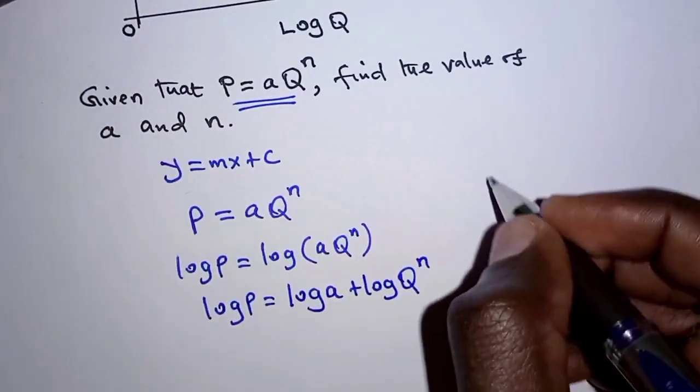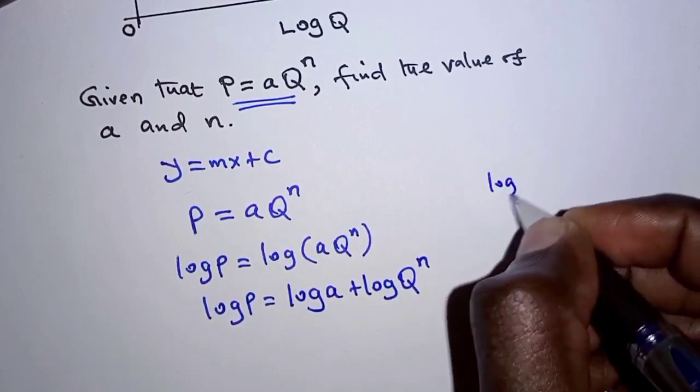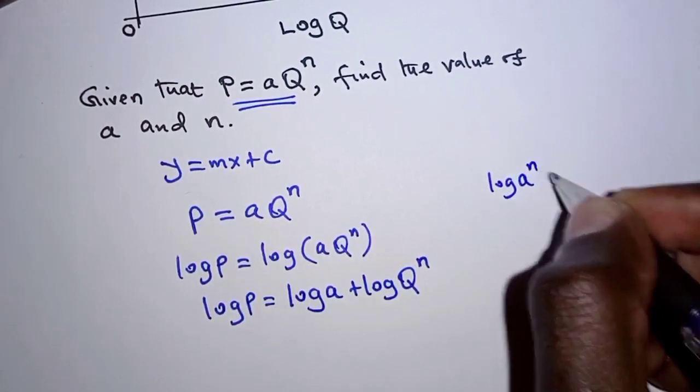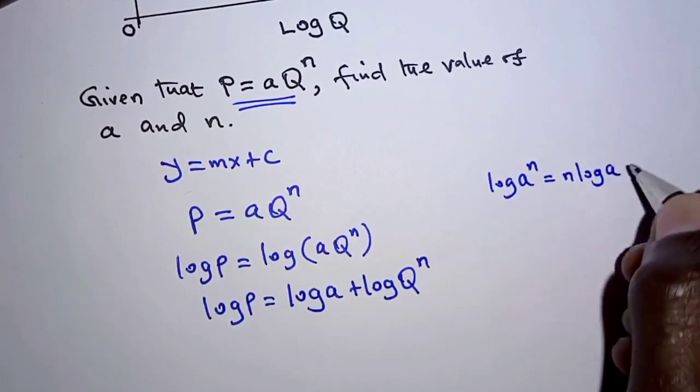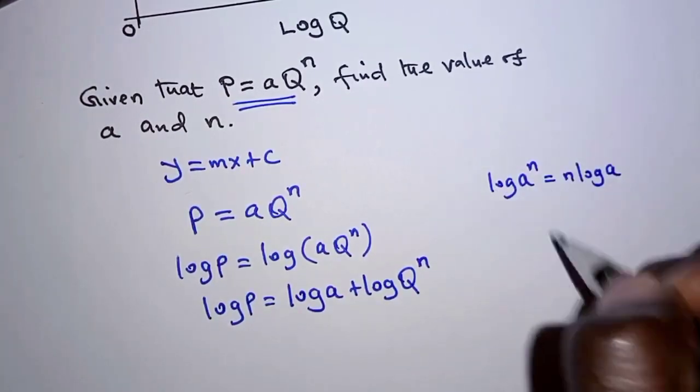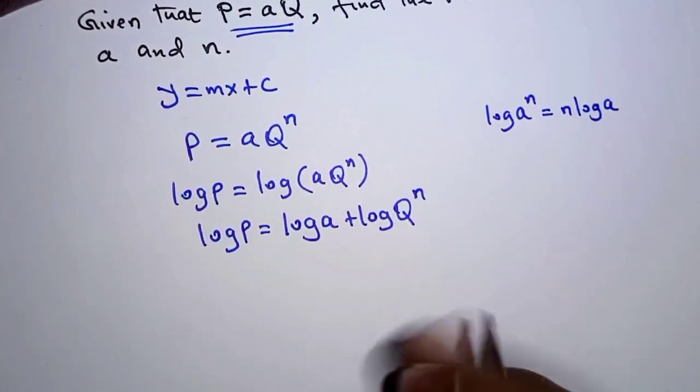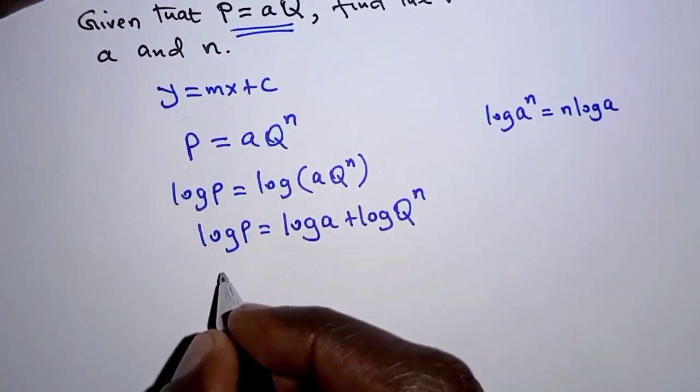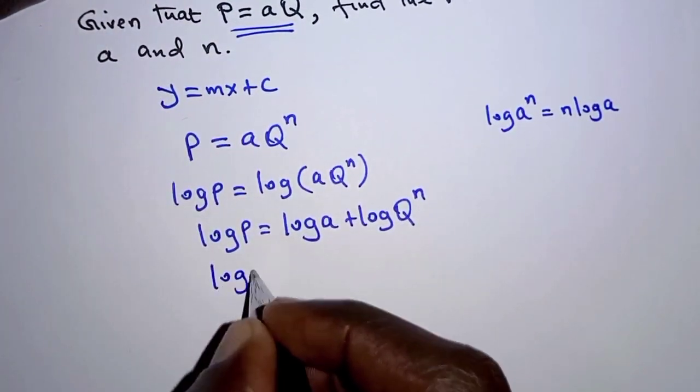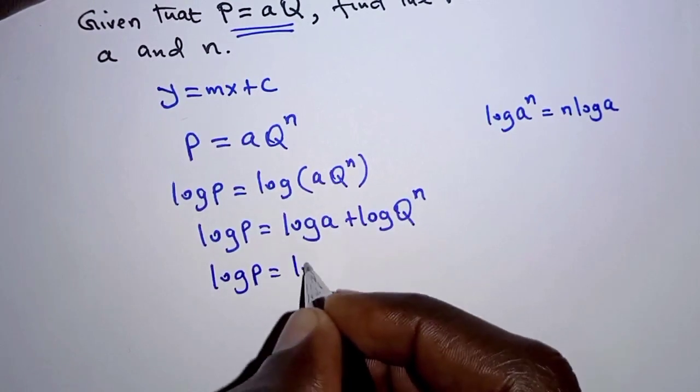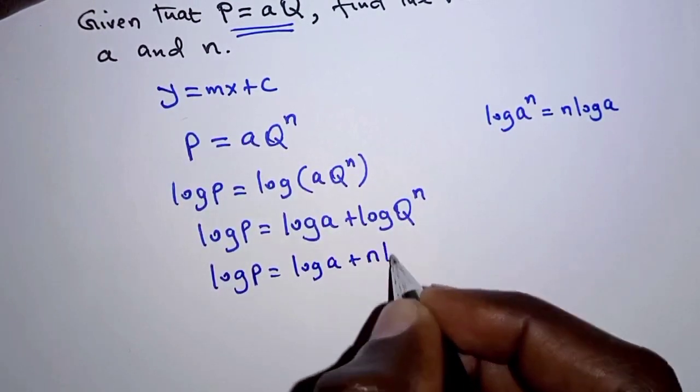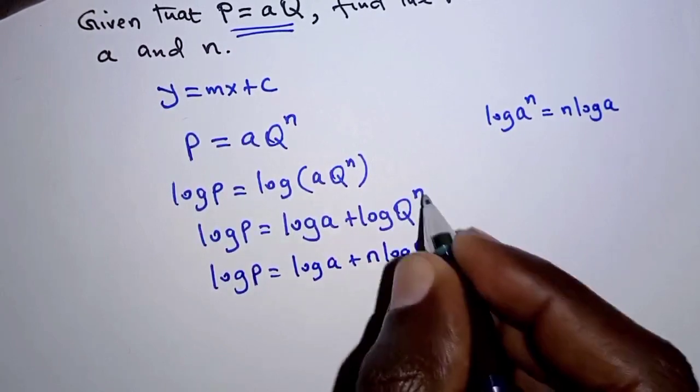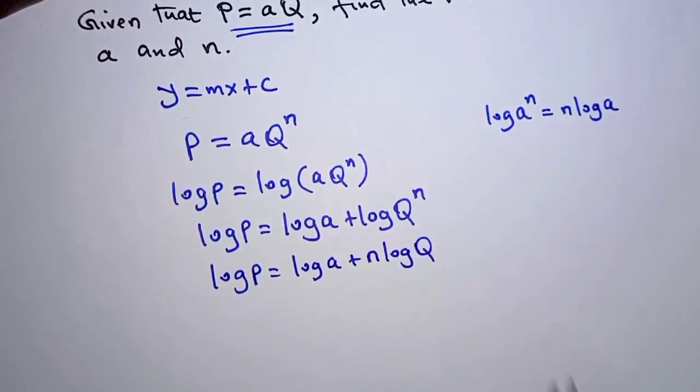We need also to recall that if you have logarithm of a number raised to a power, the power multiplies the log. So that will apply to this second part. So we have logarithm of P is equal to N log Q plus log A.